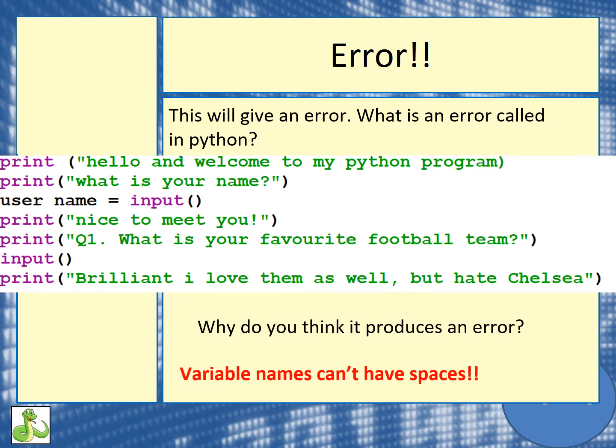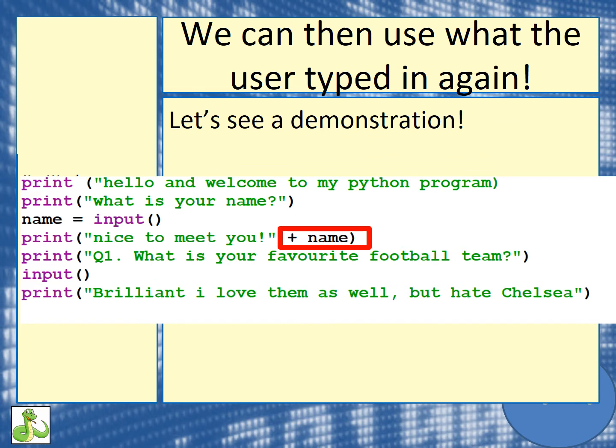I've now changed the variable name to user name. Now this would give us a syntax error, because a variable can only have one word to explain it. So user name would not work as a variable — we just have to use user or name. Once we've taken an input with our variable name, we can use it whenever we want. Remember, in our code we're not actually typing someone's name, but we're just using our variables.